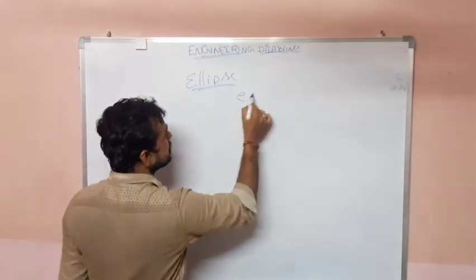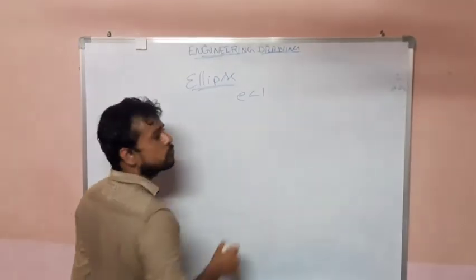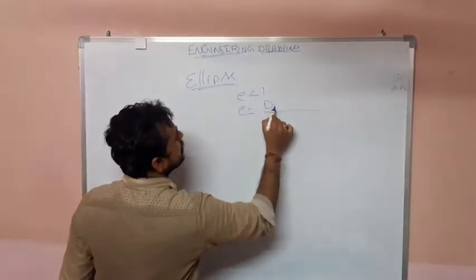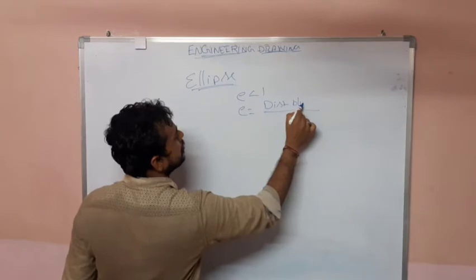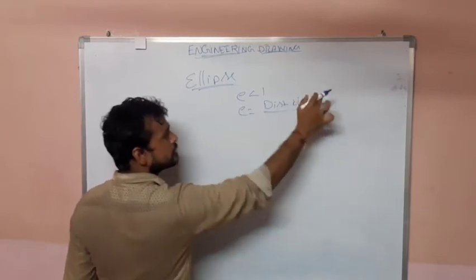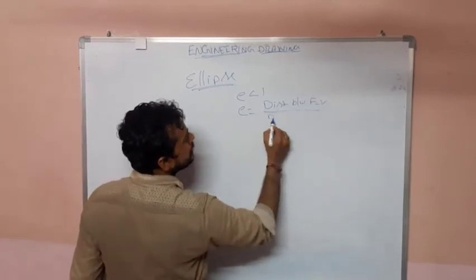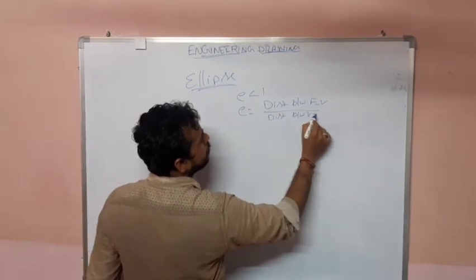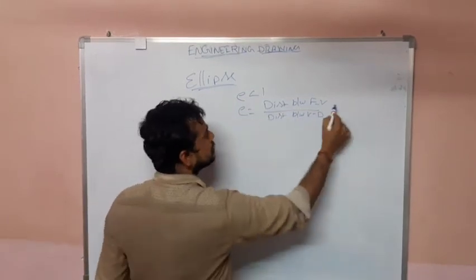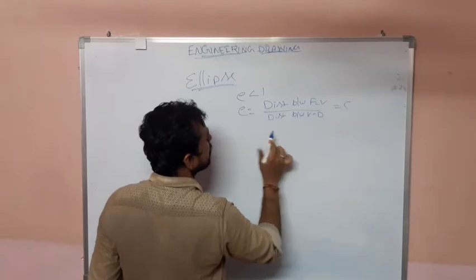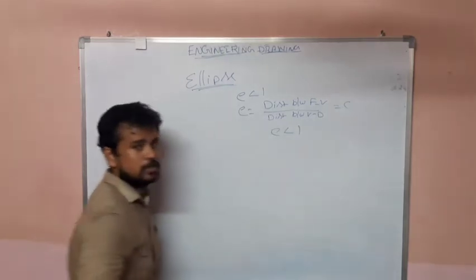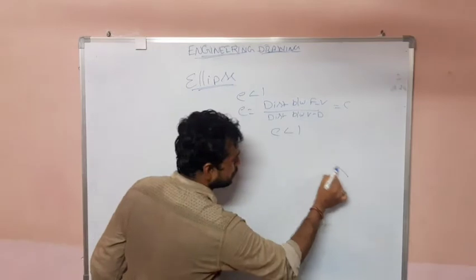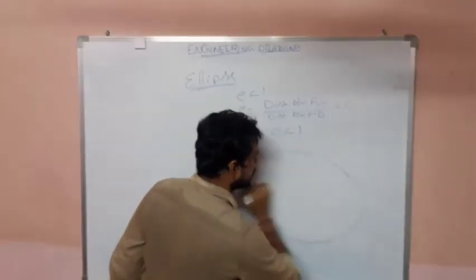The ellipse center and the eccentricity is less than one. Eccentricity is the ratio of the distance between focus to vertex and the distance between vertex to directrix, and it must be constant and less than 1. This gives the elliptical shape.